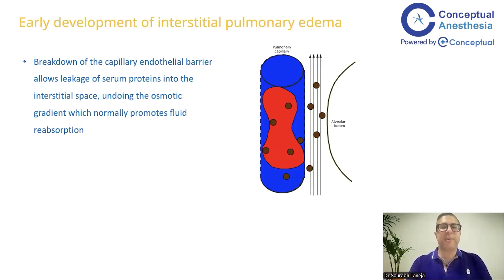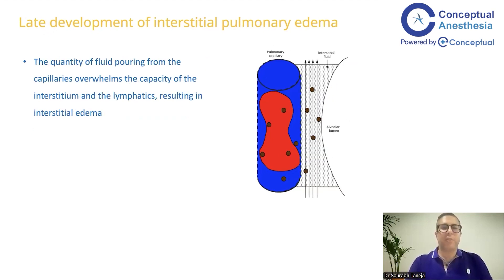In the early development of ARDS, there is a breakdown of the capillary endothelial barrier. When this breakdown occurs, protein leaks into the interstitium, and fluid follows the protein out. Normally some fluid is handled by the lymphatics, but when there is a large amount of fluid, interstitial pulmonary edema develops. When the quantum of fluid pouring from the capillaries into the interstitium overwhelms the lymphatic drainage, there is frank interstitial edema.